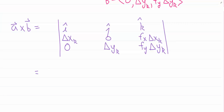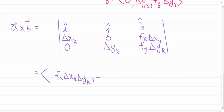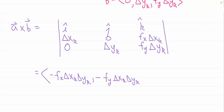Let's find the cross product a × b. Setting up the determinant with i, j, k: the a-row is (Δxₖ, 0, fₓ·Δxₖ) and the b-row is (0, Δyₖ, f_y·Δyₖ). Expanding gives: i-component: −fₓ·Δxₖ·Δyₖ; j-component: −f_y·Δxₖ·Δyₖ; k-component: Δxₖ·Δyₖ.